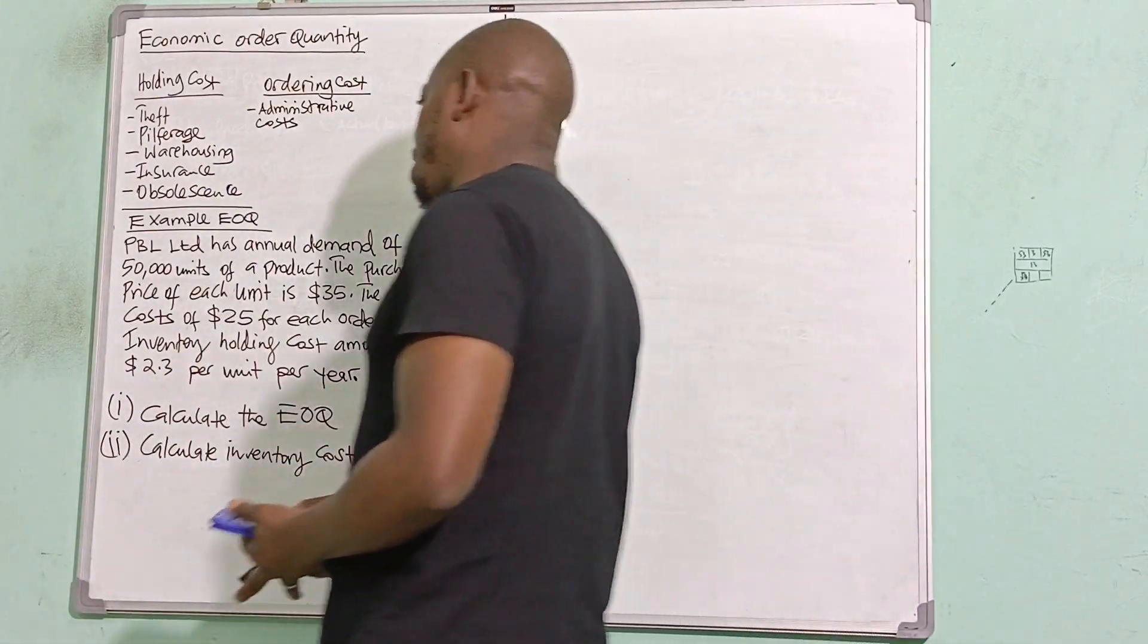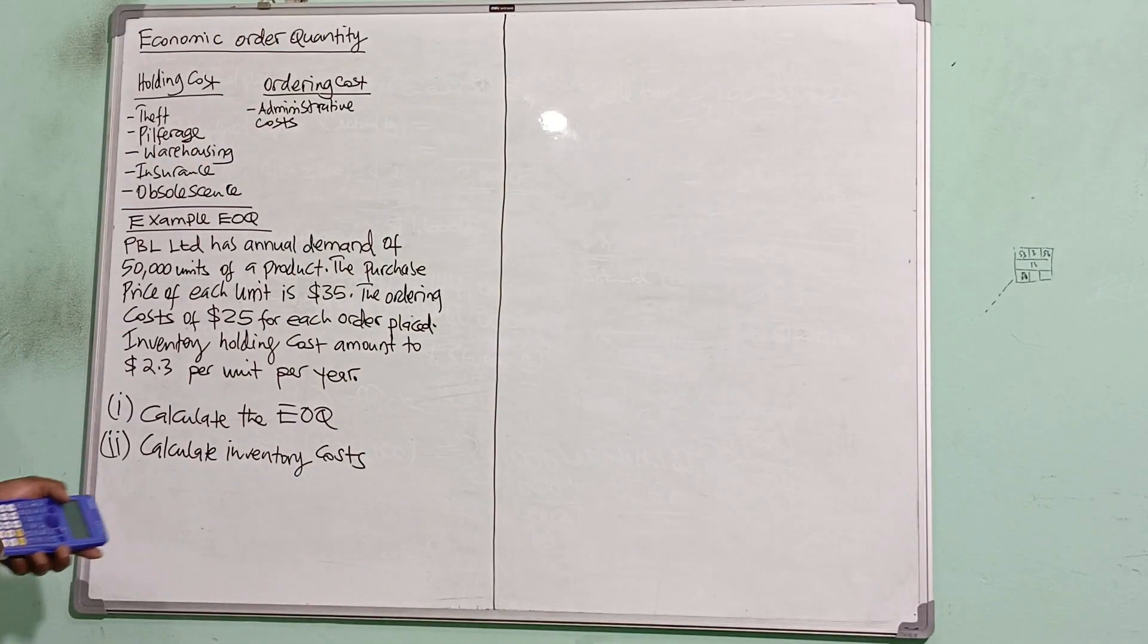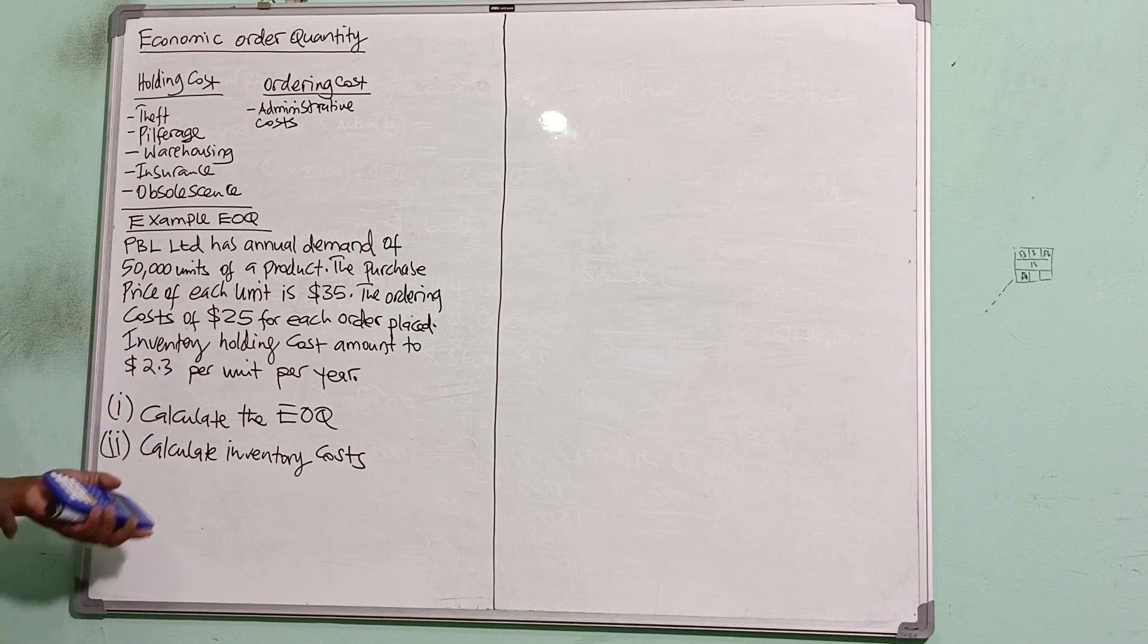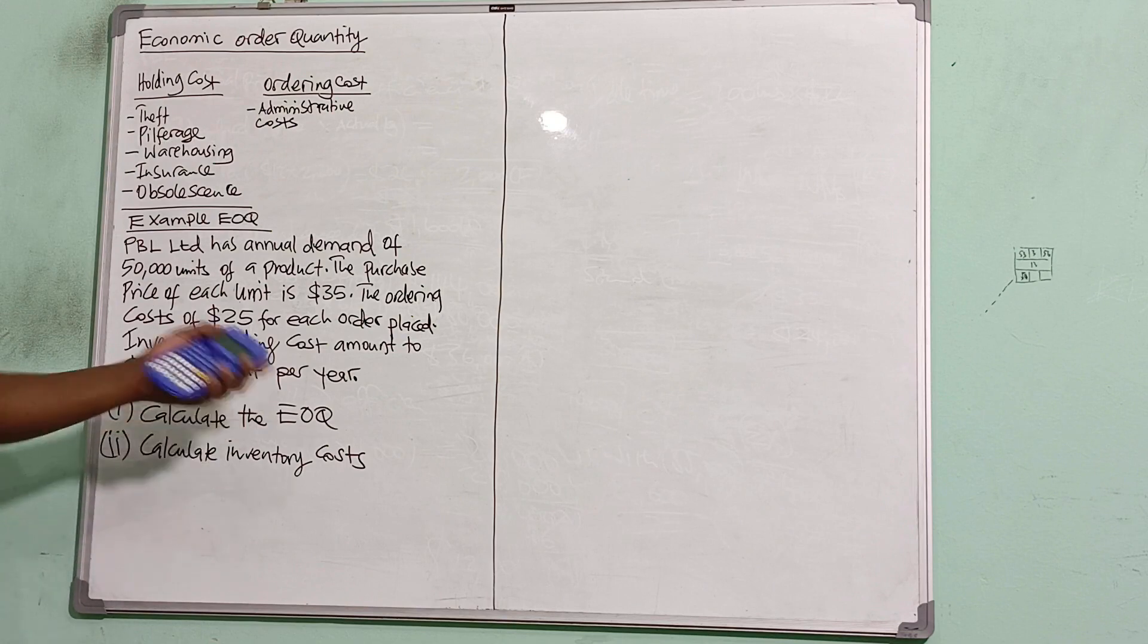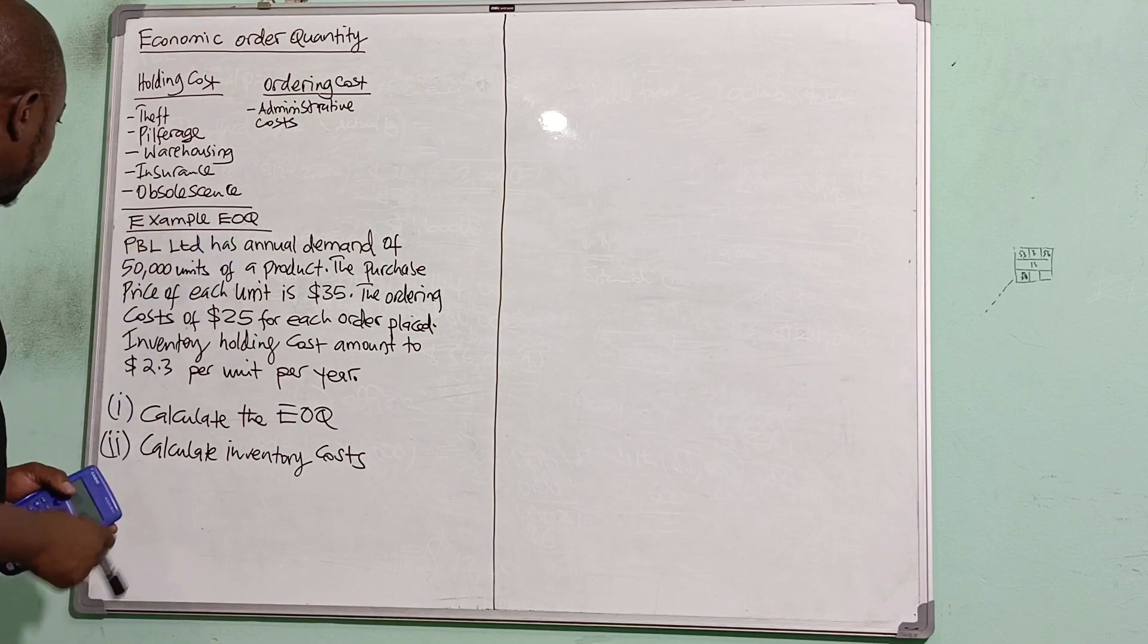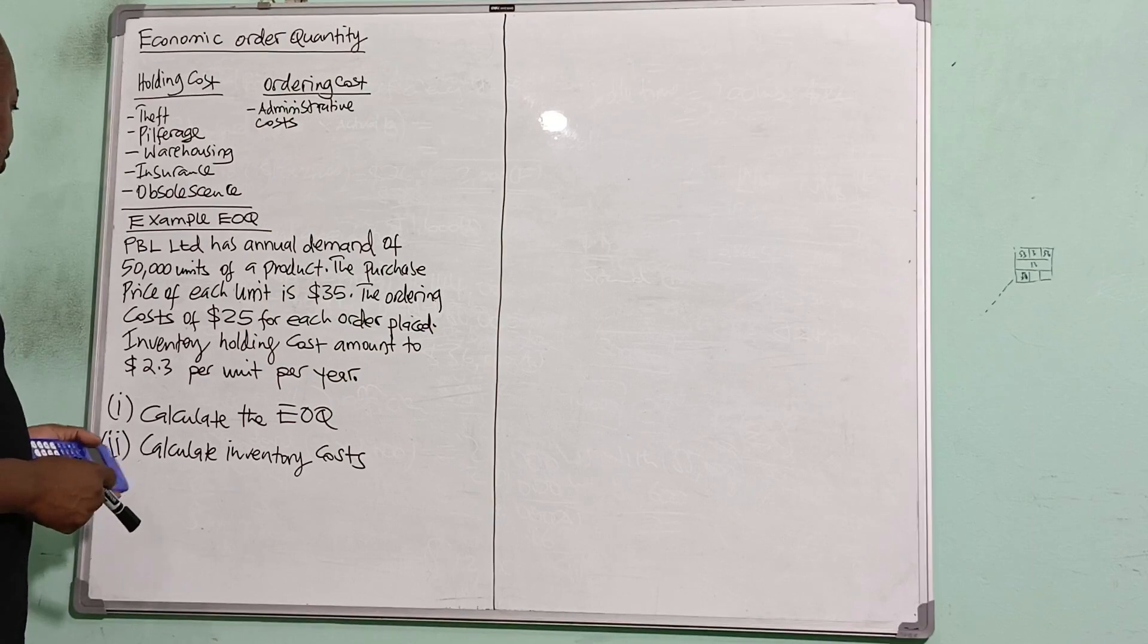Now, I have an example for EOQ here on the board which I'm going to solve. I'm going to calculate the EOQ and I'm going to calculate the two costs, which is holding costs and ordering costs. So to begin with, I'll calculate the economic order quantity, which is the ideal size. So the example goes: PBL Limited has annual demand of 50,000 units of a product.